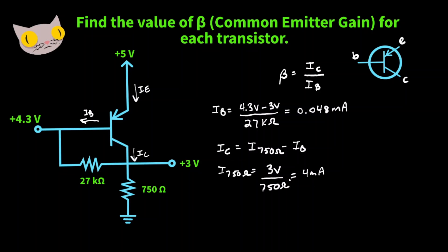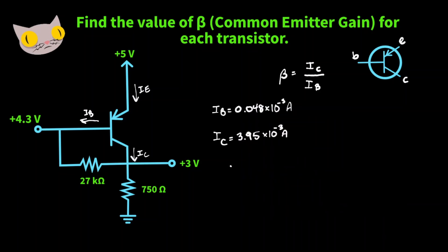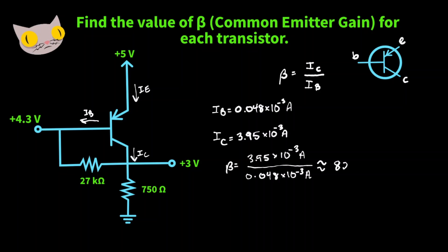Now we can find the collector current. That's going to equal 4 times 10 to the negative 3 amps minus 0.048 times 10 to the negative 3 amps, which gives us 3.995 times 10 to the negative 3 amps. Now we can solve for beta: 3.995 times 10 to the negative 3 amps over 0.048 times 10 to the negative 3 amps, giving us a value of about 82.3. That one was a little bit more involved.